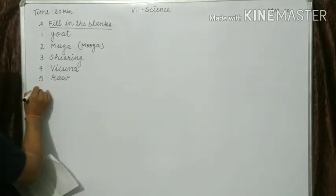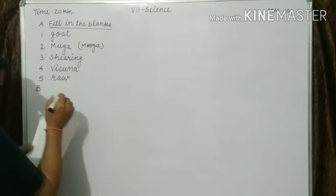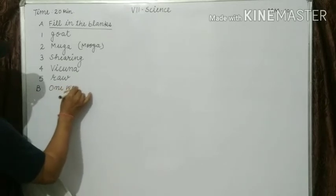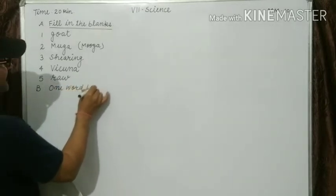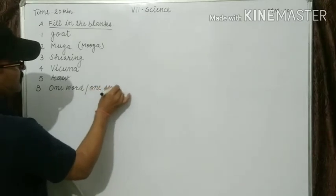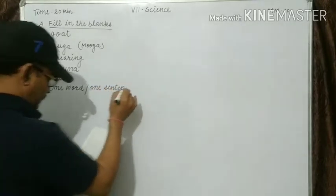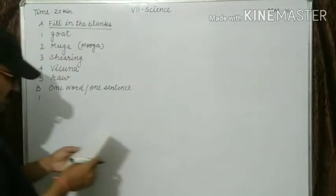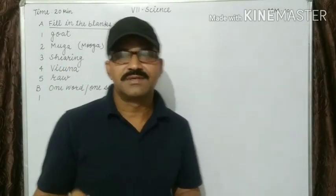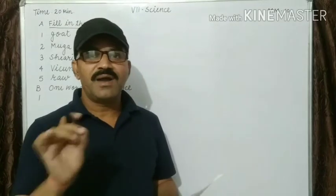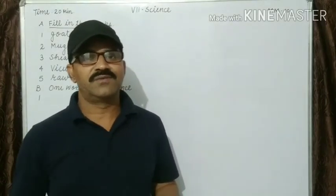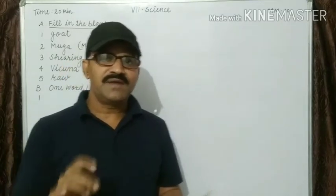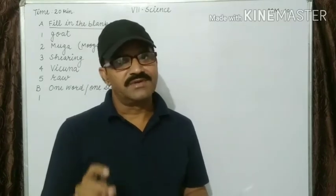B part — one word or one sentence answers. Number one: what are the natural fibres? The fibres that we get from plants and animals are called the natural fibres.